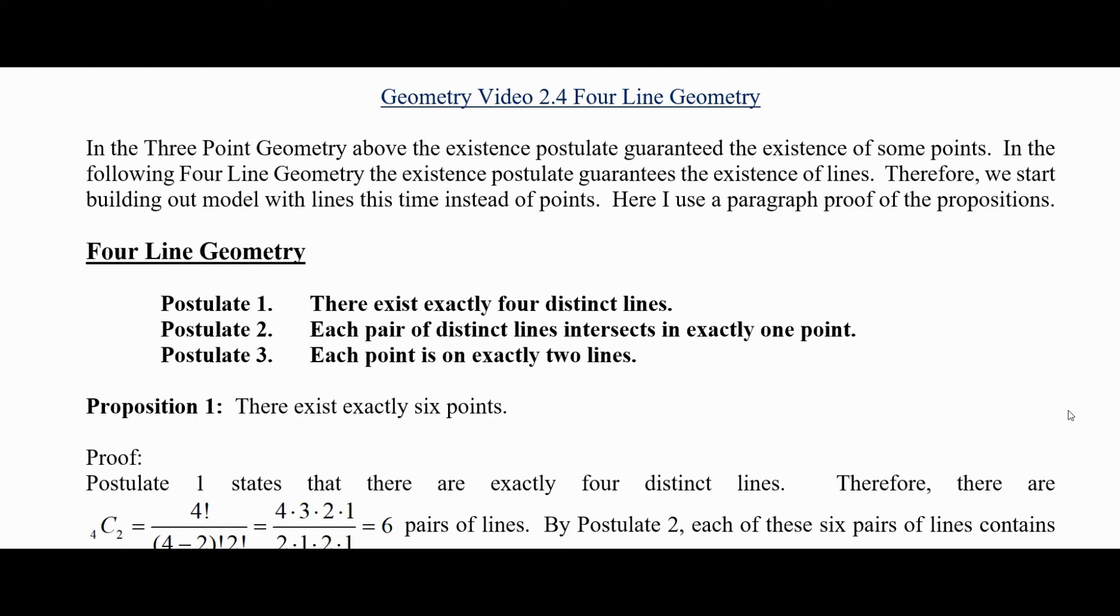Therefore, when we start to build our model, we'll start with lines this time instead of points. And here I'm going to use a paragraph form of proof of the propositions. So we just have the three postulates for this four-line geometry. Again, this is a pretty simple geometry.